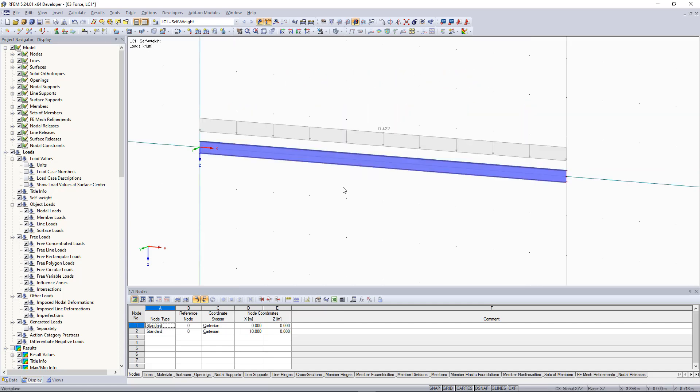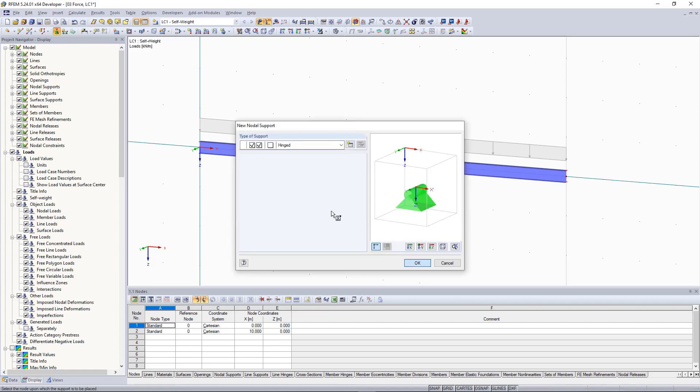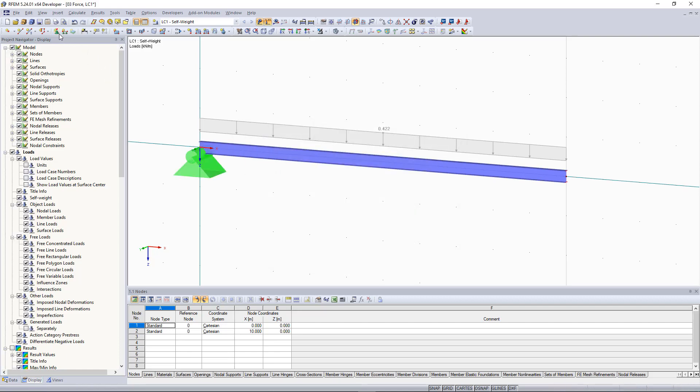To ensure that the entire system remains in equilibrium, we add supports. To do this, we click new nodal support in the toolbar and create a pin support at both the left and right ends.